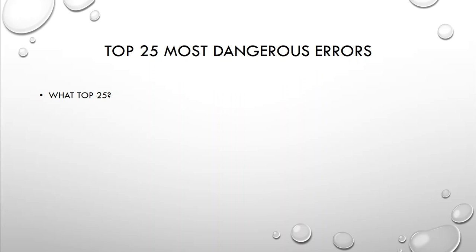The top 25 list covers a small set of the most effective mitigations which help developers to reduce or eliminate entire groups of the top 25 weaknesses, as well as many of the hundreds of weaknesses that are documented by CWE.